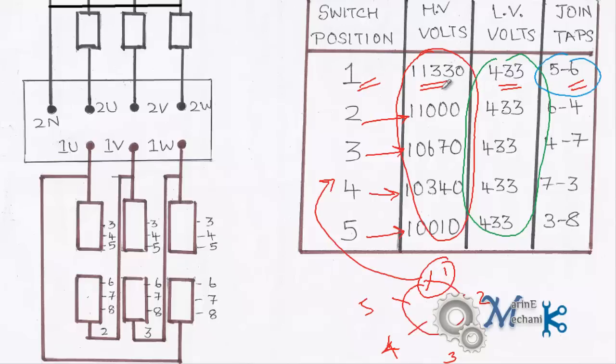So what happens is position number 1 joint tap 5 and 6, which means here you can see tap 5 and tap 6. So these two get connected and the HV side windings, these two windings are engaged. So the number of windings actively involved in transformation process varies. That's what it means.